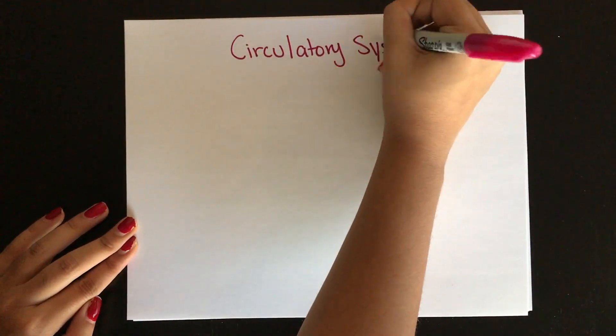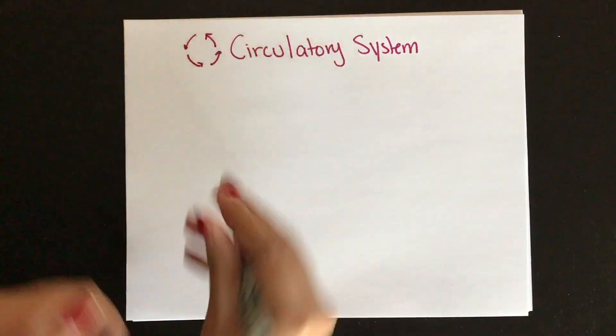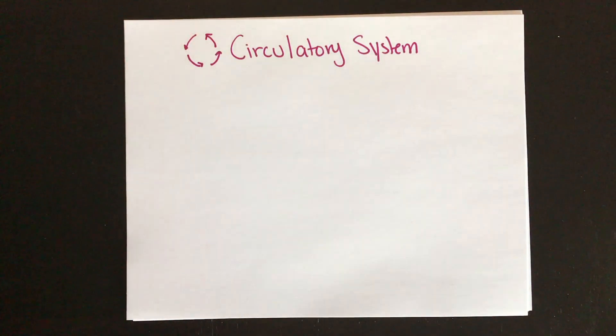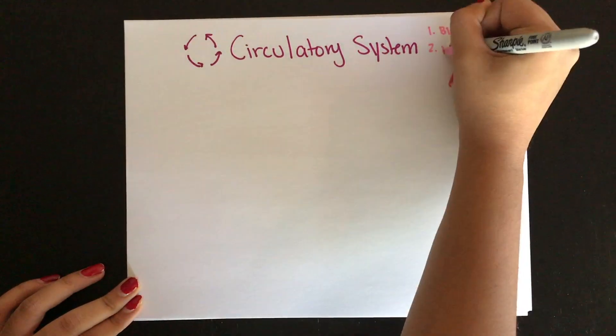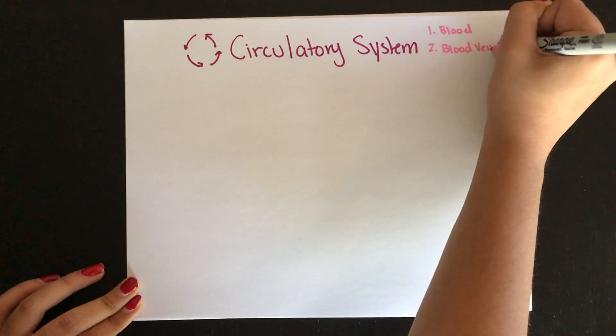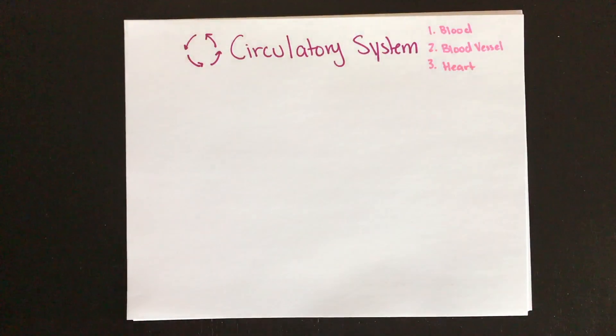This system is made up of three major components: the first one being the blood, the second one being the blood vessels, and the third being the heart. And we're going to start off by talking about the blood.